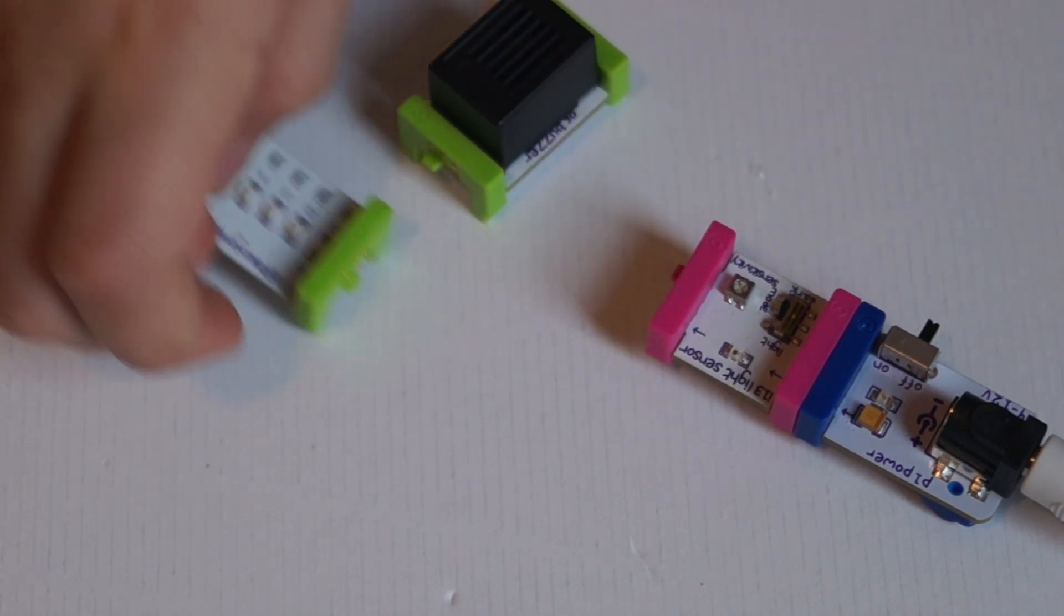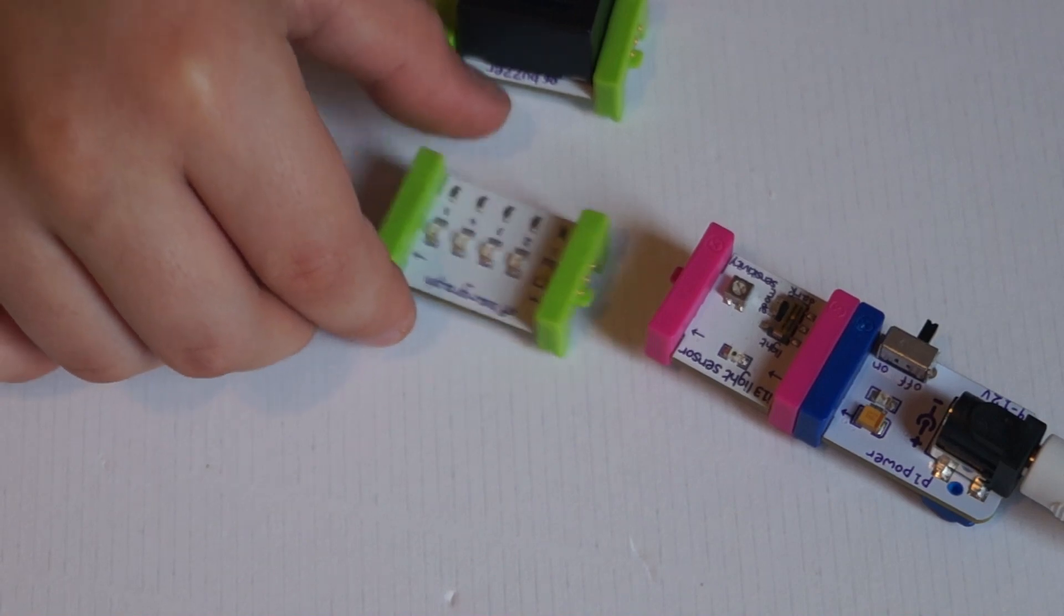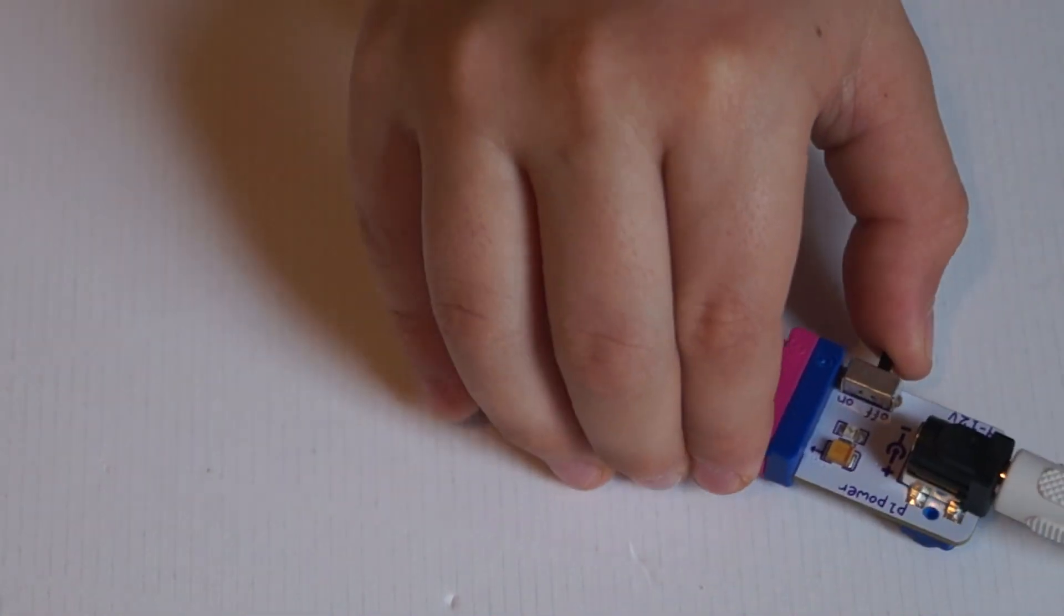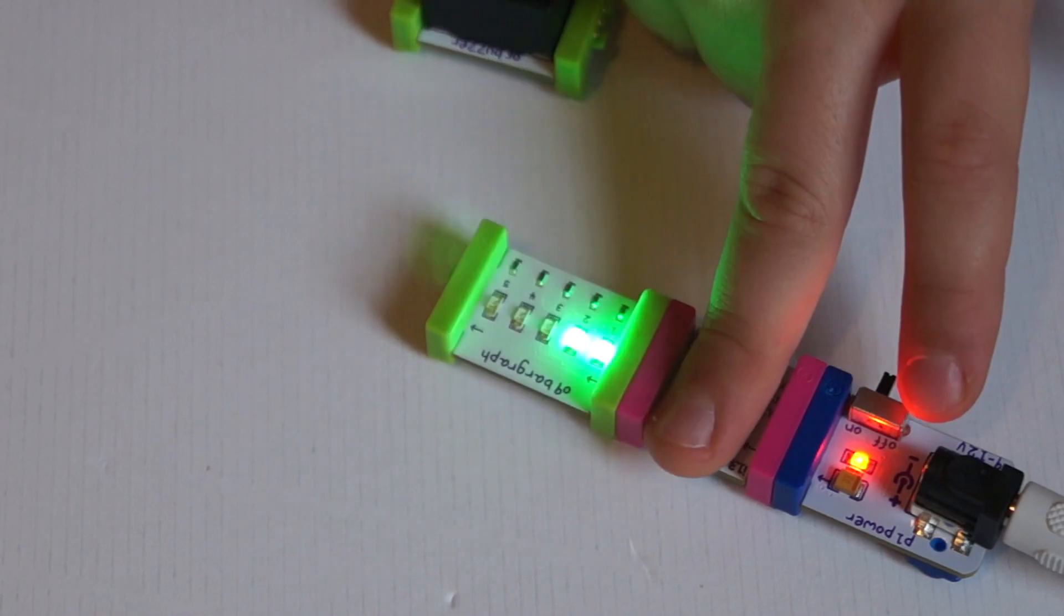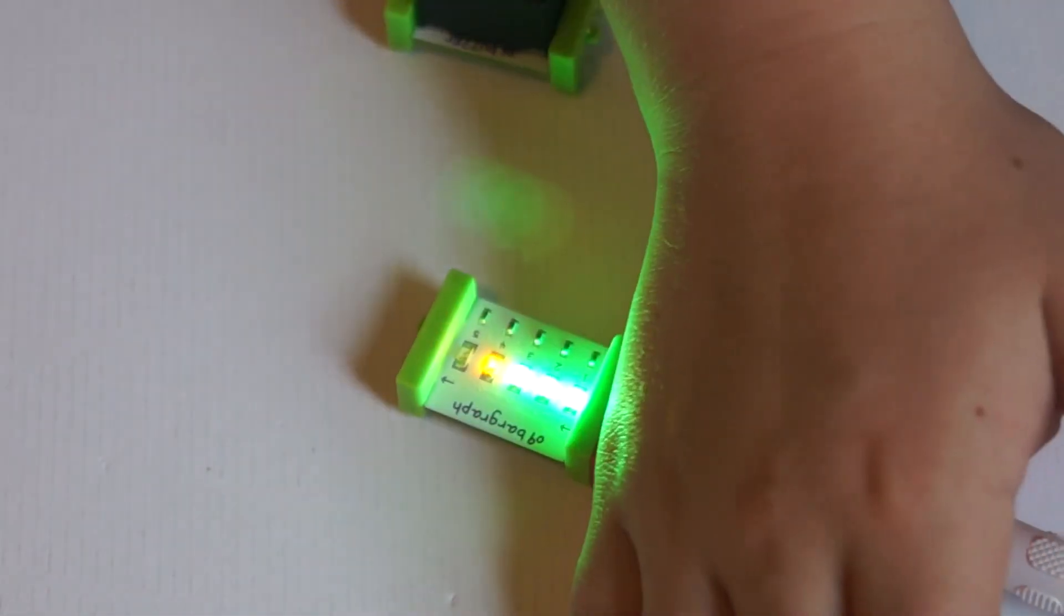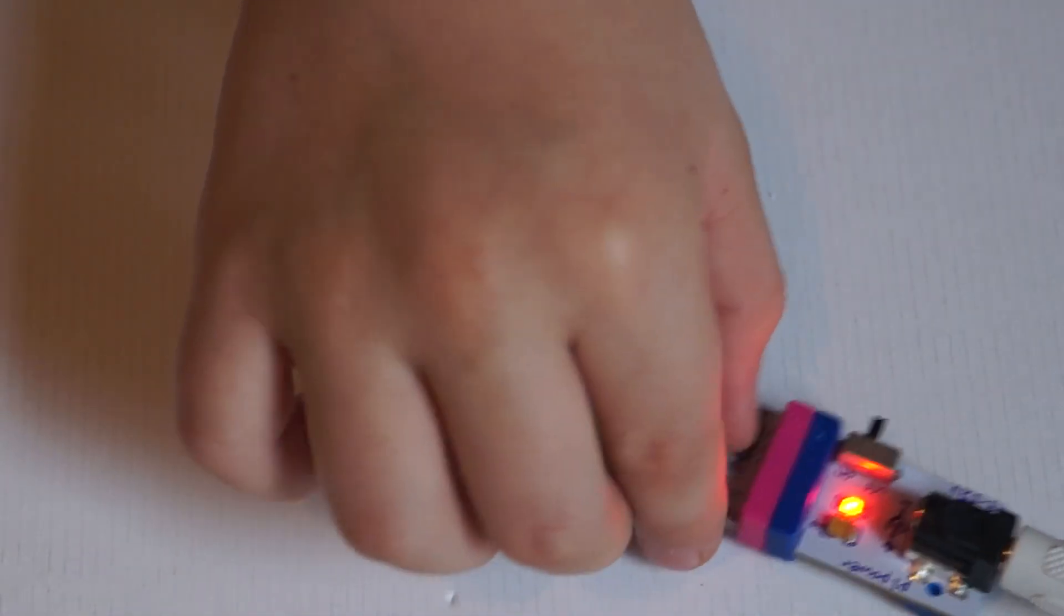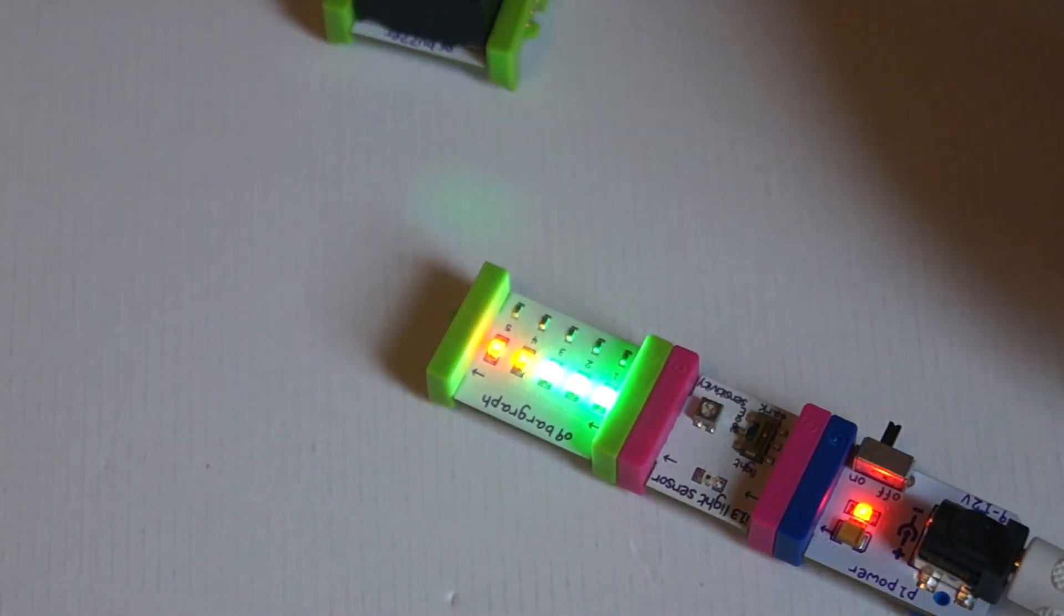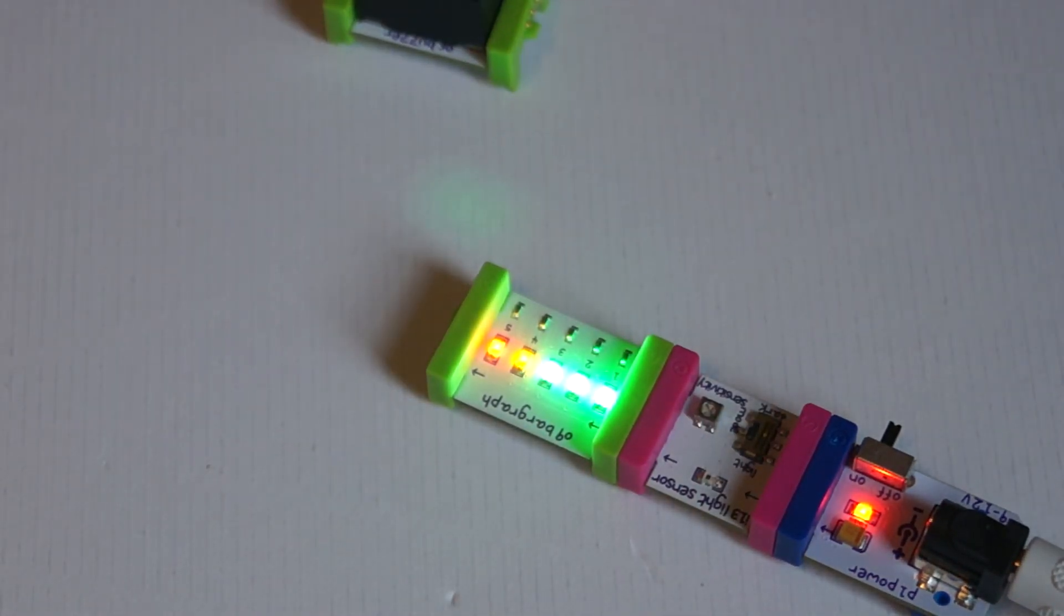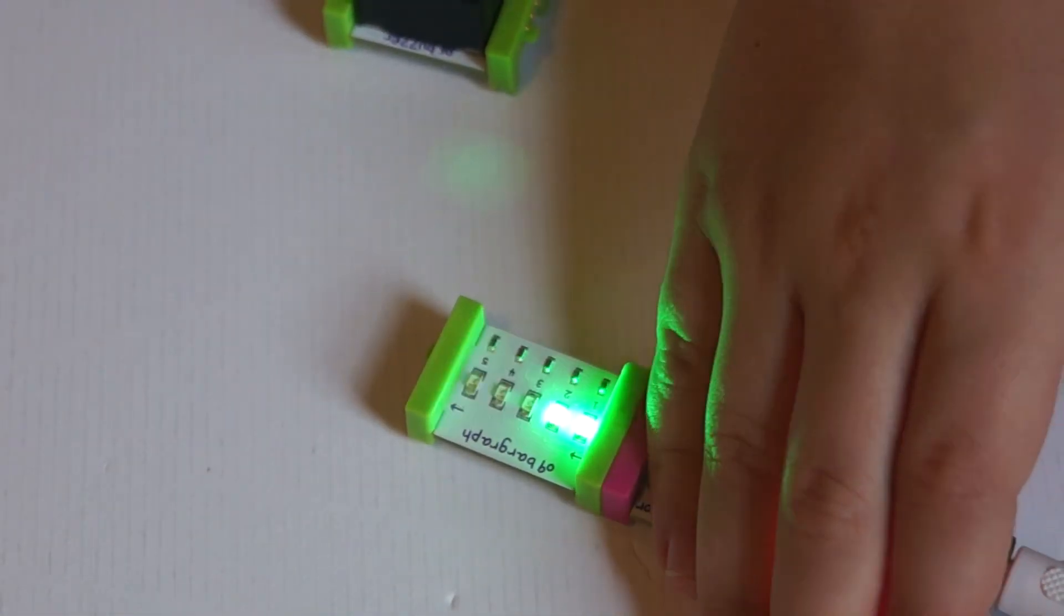So these are the output bits. We have the O9 bargraph. Snap that on there. So as you can see, I could turn it to light, it'd go all the way up, and I could do that.